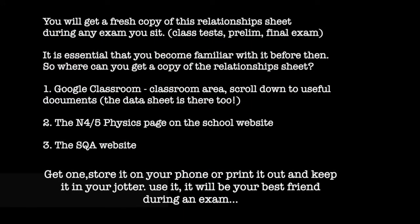Whereabouts can you get one of these relationship sheets? Well, there's three places. There's already one in Google Classroom. In the classroom area. Just scroll down to the bottom to the useful documents. There's also one on the physics page of the school website. Just look in the National 4, National 5 area. Again, it's in the useful documents. And the third place is the SQA website. If you just Google Relationship Sheet, National 5 physics, you'll find it on the SQA website as well.